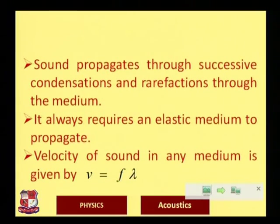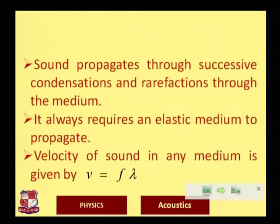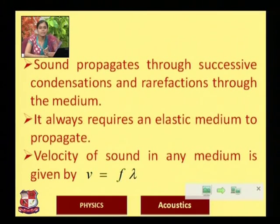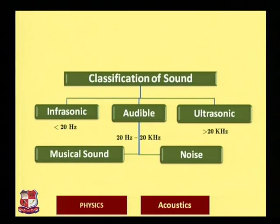Once we understand sound propagation, we can classify sound into infrasonic, audible, and ultrasonic based on frequency. Infrasonic sound has a frequency less than 20 Hz. Audible sound resides between 20 Hz to 20 kHz — the range in which the human ear can sense sound. Ultrasonic sound has a frequency greater than 20 kHz. Within audible sound, we can further classify into musical sound and noise.